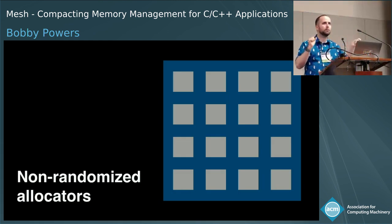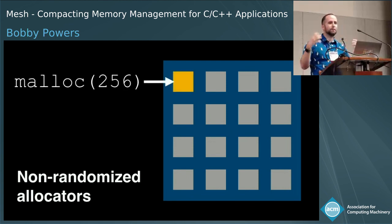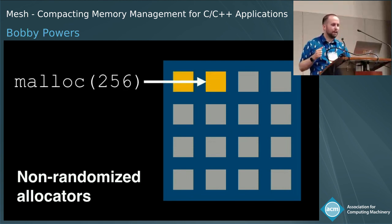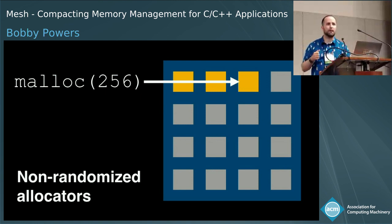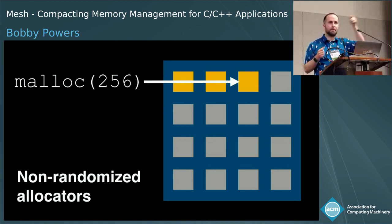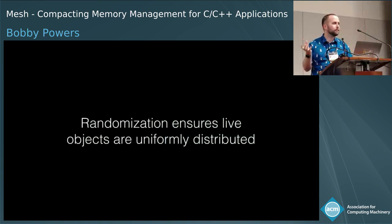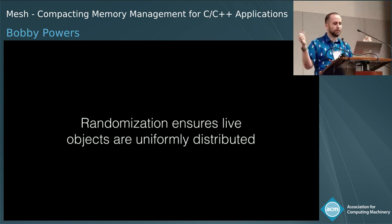In non-randomized allocators — which are most allocators — especially during program startup, if you ask for several objects in a row of the same size, you get several addresses in memory that are next to each other. What randomization will let us do is ensure that live objects are uniformly distributed within pages in the heap.